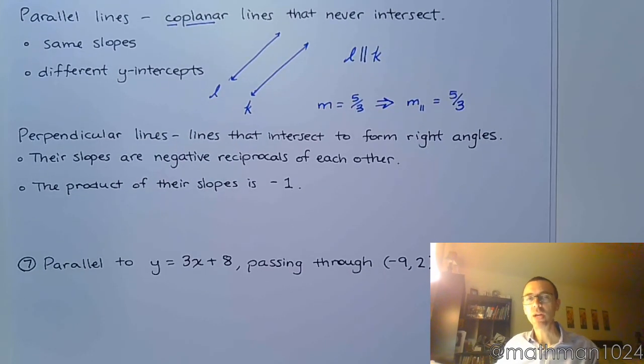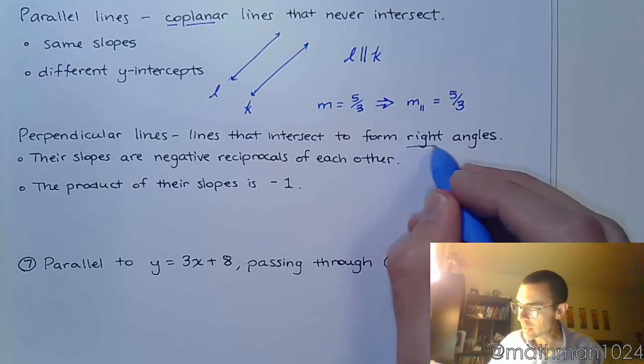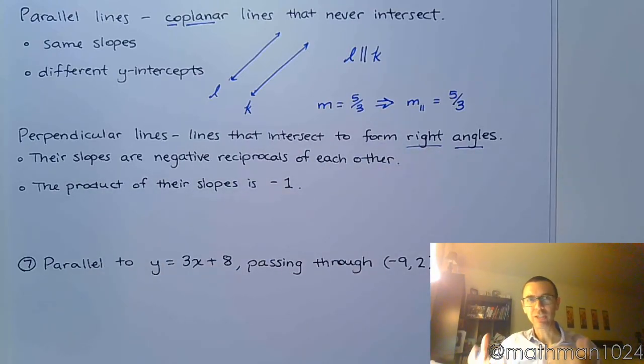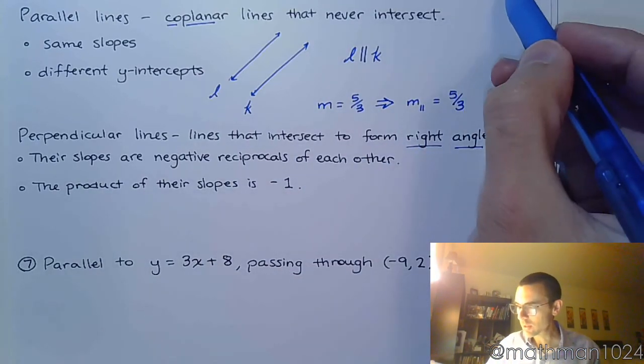Perpendicular lines. Well, these guys are a slightly different class. These are lines that do intersect, and they intersect to form right angles. Remember, right angles are like those nice pretty corners that you like to adjust things with. This is a right angle. Love it.